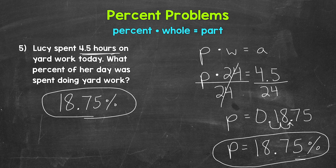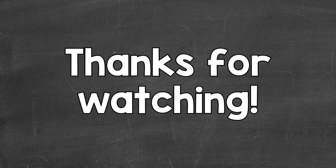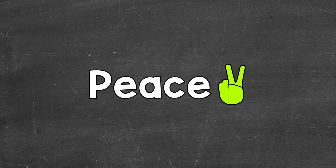If we don't want a decimal and just want a whole percent, we can round to the nearest whole percent — the ones place. We have an 8 with a 7 to the right in the tenths, so this rounds to 19%. So approximately 19%. So there you have it — that's how to solve percent problems using the percent equation. I hope that helped. Thanks so much for watching. Until next time, peace.